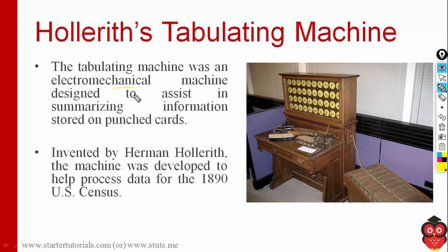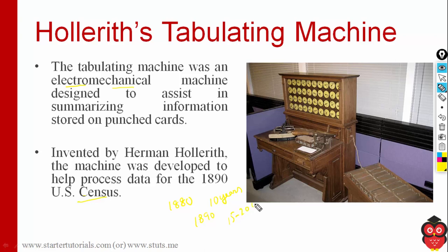Finally, we have the Hollerith tabulating machine. This is the first electromechanical machine — all machines prior to this used only mechanical components, but this one uses electronic components. It was used for the US census. The 1880 US census took nearly 10 years; they estimated the 1890 census would take around 15 to 20 years.